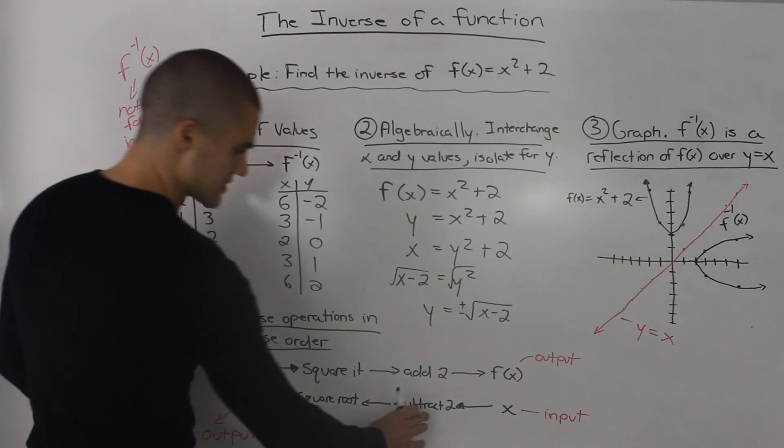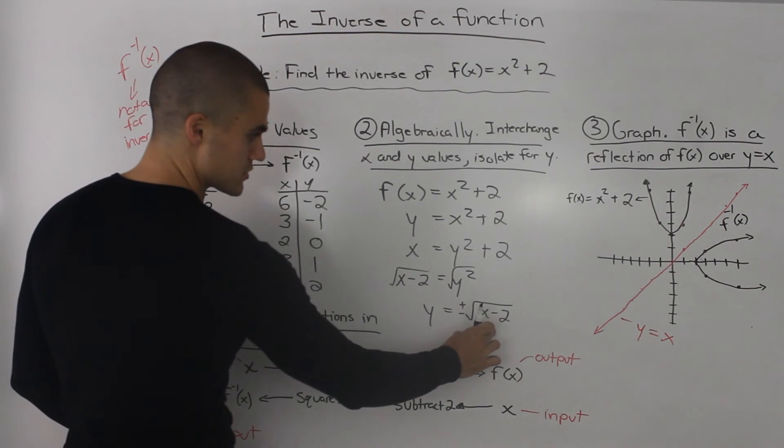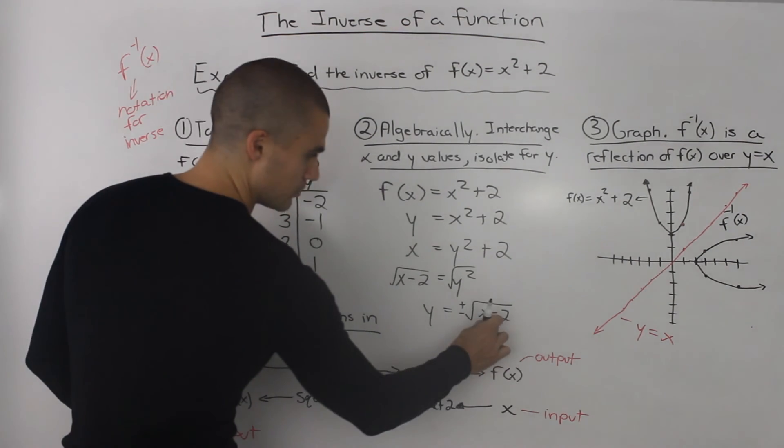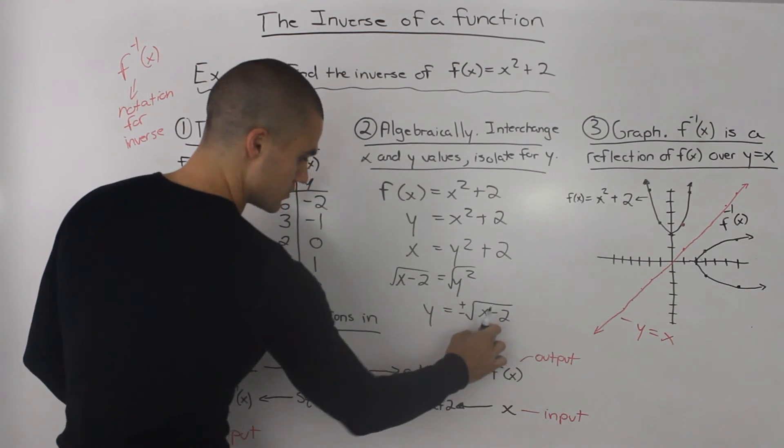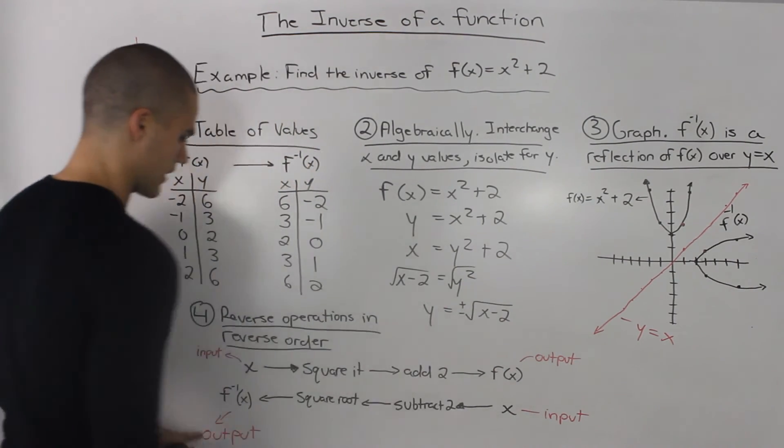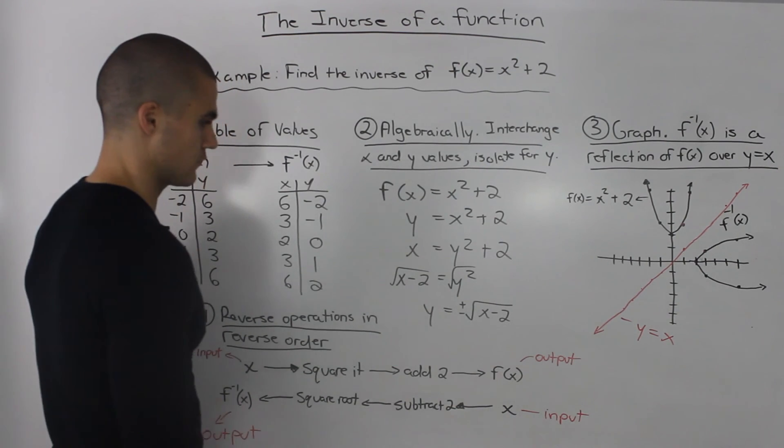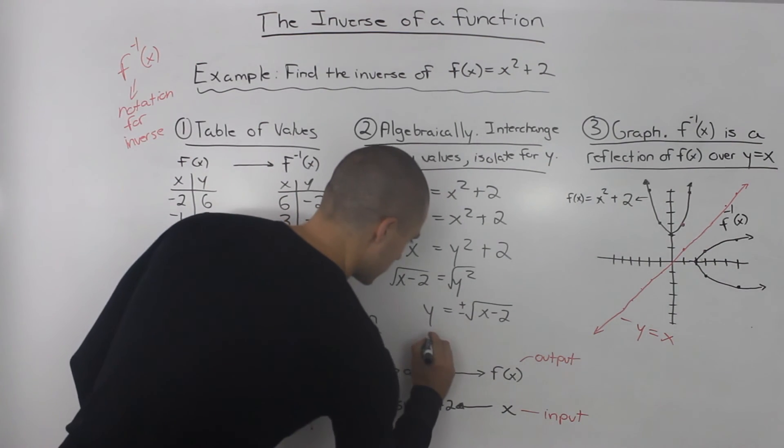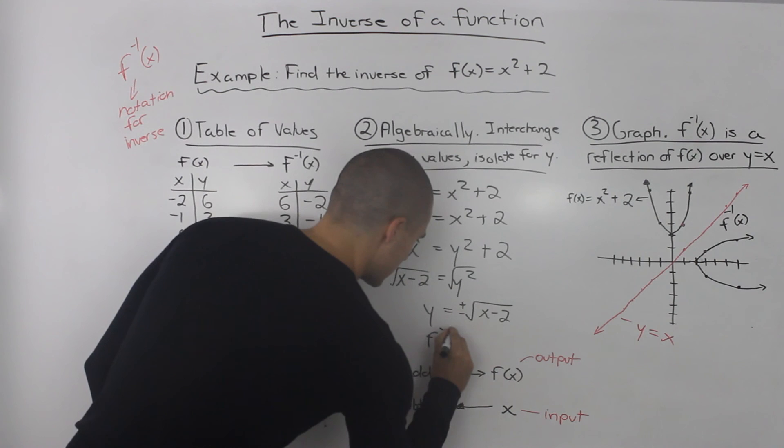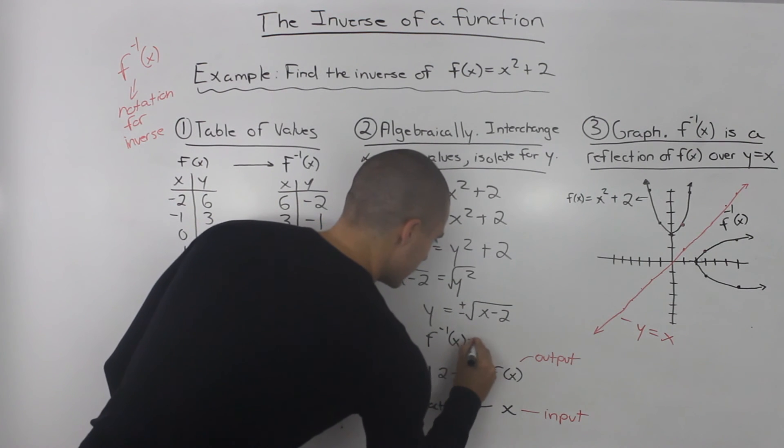So notice how this here, this process corresponds to what we got here. We take an input, subtract 2, and then we square root everything, and we end up with our output, the inverse. This can actually also be rewritten as the inverse notation.